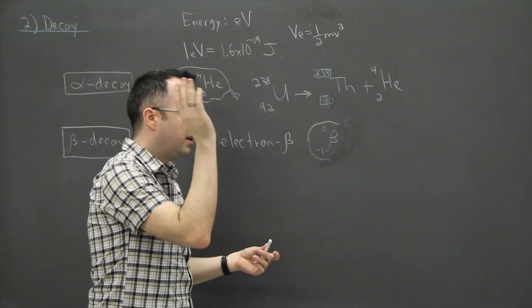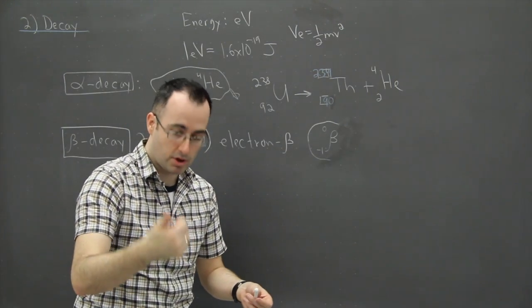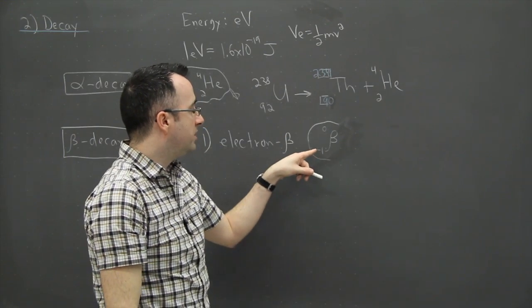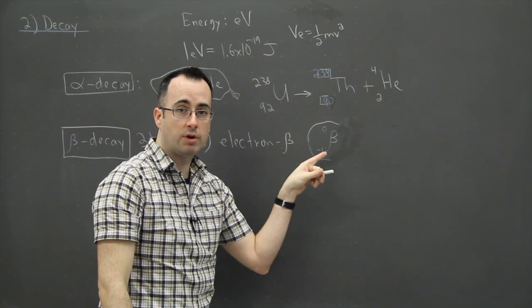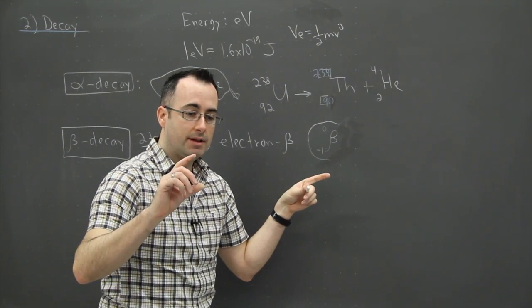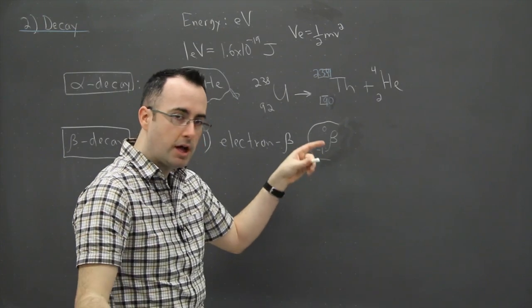So electrons don't have any protons. Electrons don't have any neutrons. Remember, an atom is made up of protons, neutrons and electrons. So it has none of those. But what we do in order to make the charge and everything else work out, it turns out we say it has negative one protons. That's because an electron has the opposite charge. And so we use this negative one here to help us out.